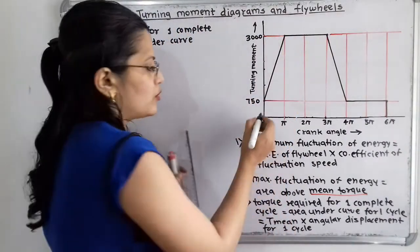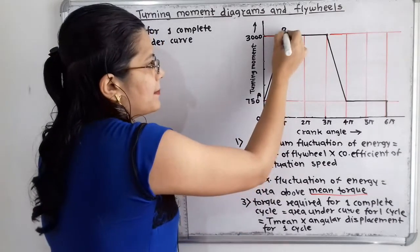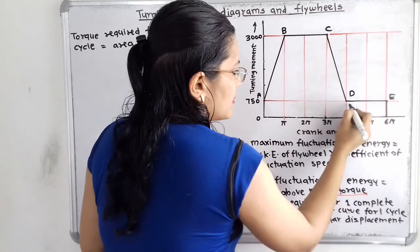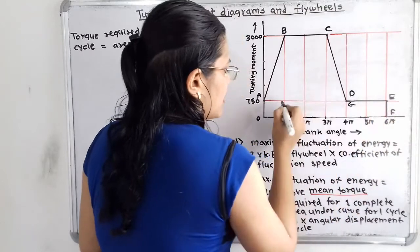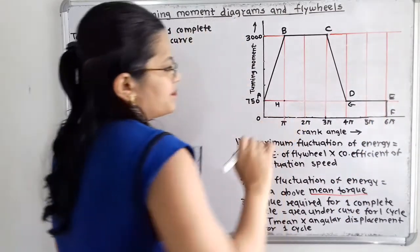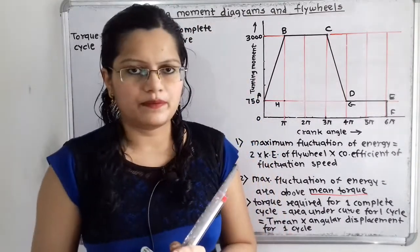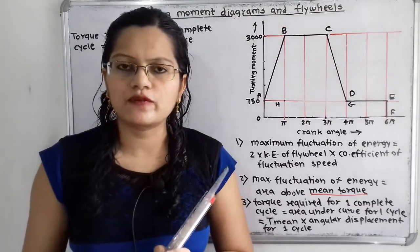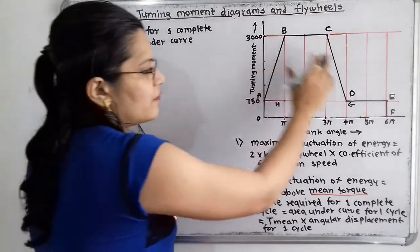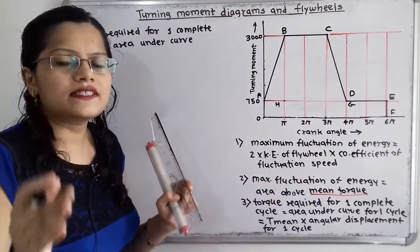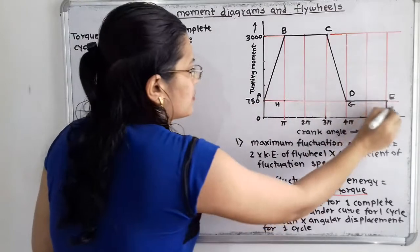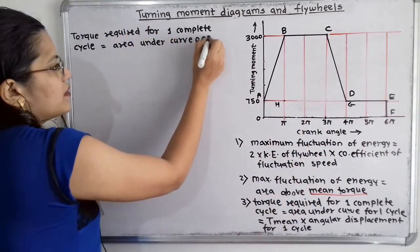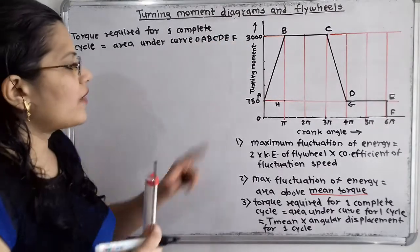We label the key points: O, A, B, C, D, E, F, G, and H. One complete cycle runs from 0 to 6 pi. The torque required for one complete cycle equals the area under the curve O-A-B-C-D-E-F. We split this into geometric parts: rectangle O-A-E-F, triangle A-B-H, rectangle H-B-C-G, and triangle C-G-D.